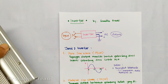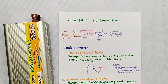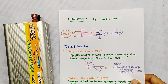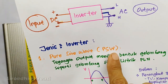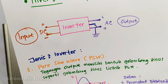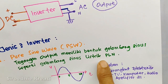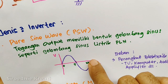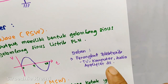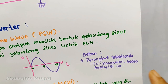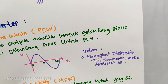Ketika kita ingin membeli sebuah inverter, kita harus memahami bahwa inverter yang berada di pasaran itu tidak semuanya sama. Ada perbedaan. Di sini ada beberapa jenis, seperti misalnya yang jenis pertama adalah full sine wave atau disingkat PSW. Ini adalah jenis inverter di mana tegangan outputnya memiliki bentuk gelombang sinus yang sama persis dengan bentuk gelombang listrik PLN, dan jenis inverter ini bisa digunakan untuk perangkat elektronik seperti TV, komputer, audio amplifier, ataupun peralatan kontrol lainnya.